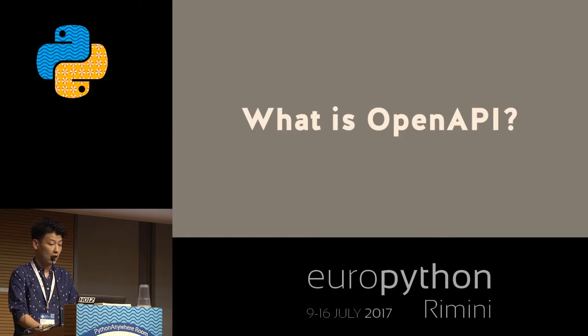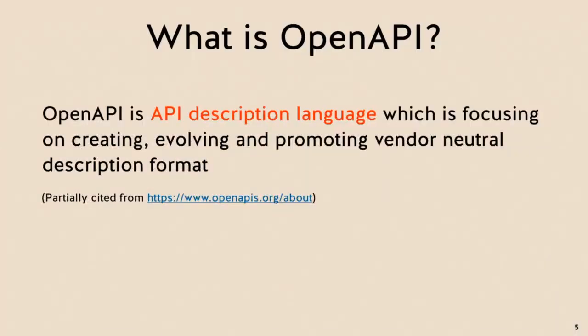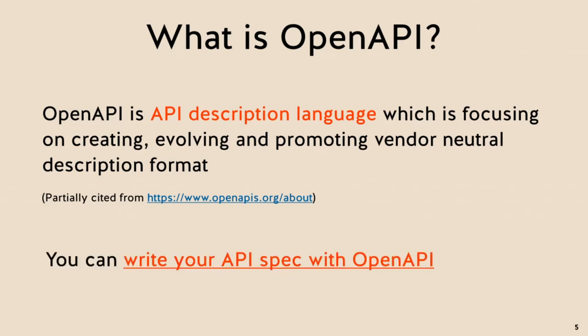First, what is OpenAPI? Who knows about OpenAPI? Who is using it for their project? OpenAPI is literally an API description language focusing on creating, evolving, and promoting a vendor-neutral description format. What can you do with OpenAPI? It's simple — you can write your API spec with OpenAPI.